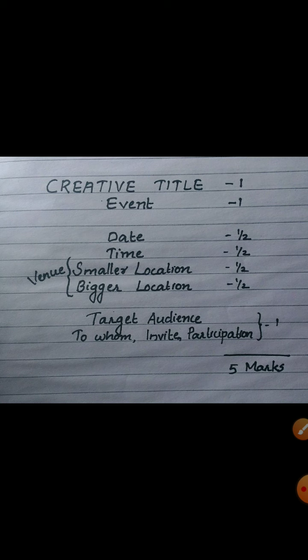The next component is the time — it can be either in the morning or in the evening, maybe from 5 to 6 p.m., and we will look at this more clearly in the examples. Then the venue: the place where the program is going to be conducted. We must clearly mention both the smaller location and the bigger location, each worth half a mark. Then the target audience — to whom are we writing this notice — also carries one mark. So in total: date half mark, time half mark, smaller location half mark, bigger location half mark, and audience one mark — totalling five marks.